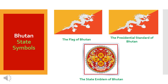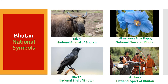Here are the three very important state symbols of Bhutan. These are: the flag of Bhutan, the flag of the President of Bhutan, and the state emblem of Bhutan. These are the national symbols of Bhutan. Takin is the national animal of Bhutan. Raven is the national bird of Bhutan. Himalayan blue poppy is the national flower of Bhutan. And archery is the national sport of Bhutan.